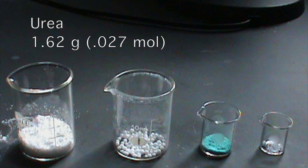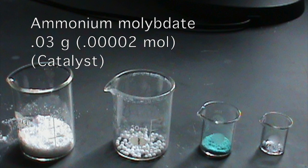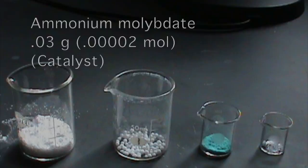Next you'll need 1.62 grams of urea, 1.16 grams of copper chloride dihydrate, and 0.03 grams of ammonium molybdate as a catalyst. In the past other people have had success substituting boric acid for the ammonium molybdate catalyst.